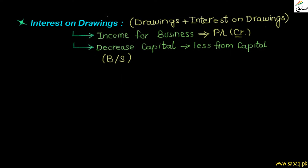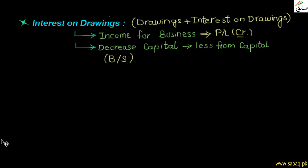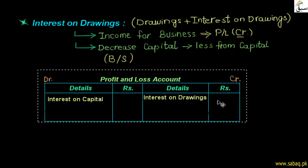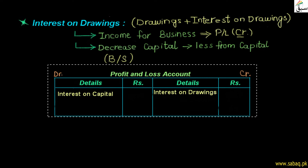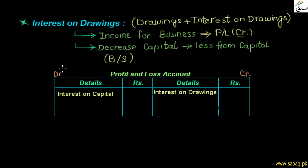For a clear understanding, let's look at the profit and loss account and balance sheet. The profit and loss account has two sides: the debit side, which records expenses, and the credit side, which records income. Here we have written interest on capital. We assume that capital invested in the business was 1 lakh rupees, and the interest rate paid to business owners is 10%.